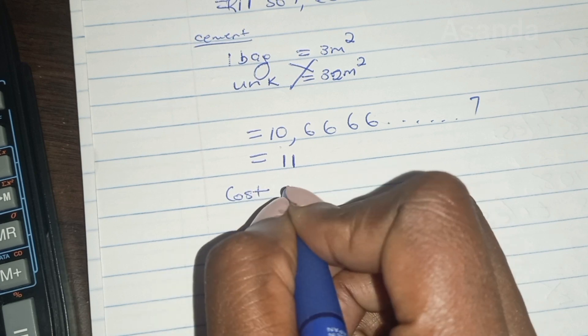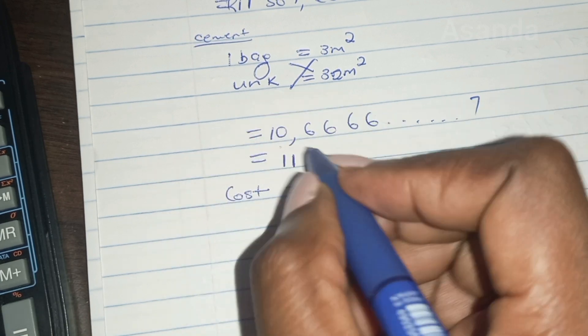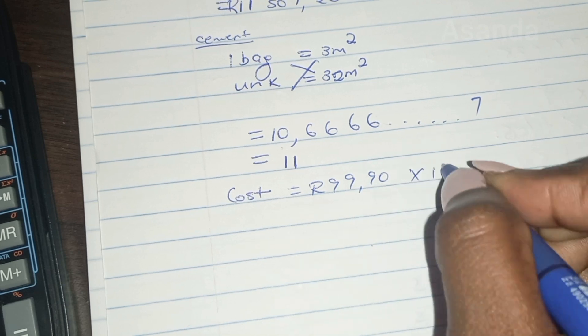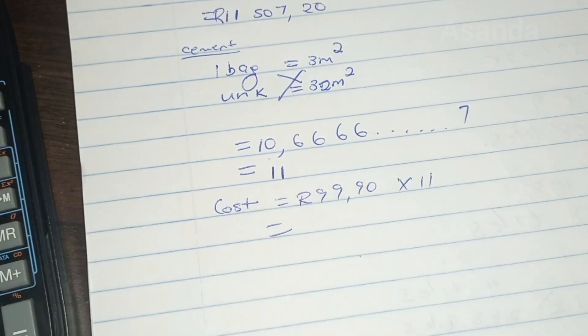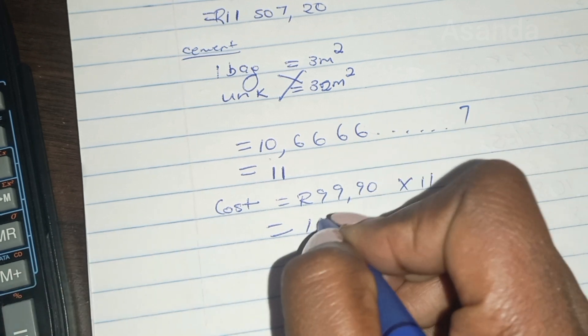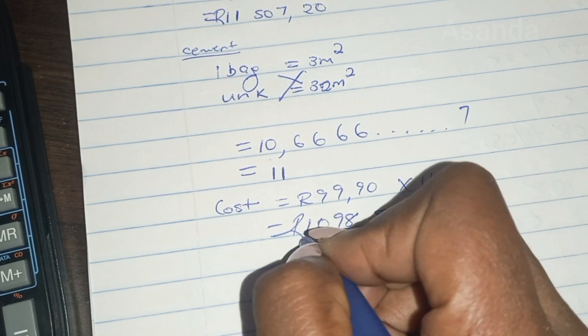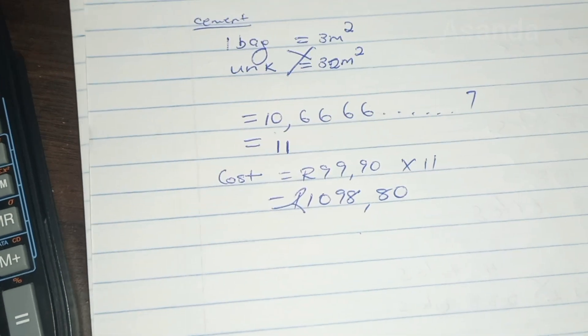Now, how much is the cost here? So one bag is 99.90. How many? 11. Let's find out. 99.90 multiplied by 11. And then we're going to get 1,098.80 for the cement.